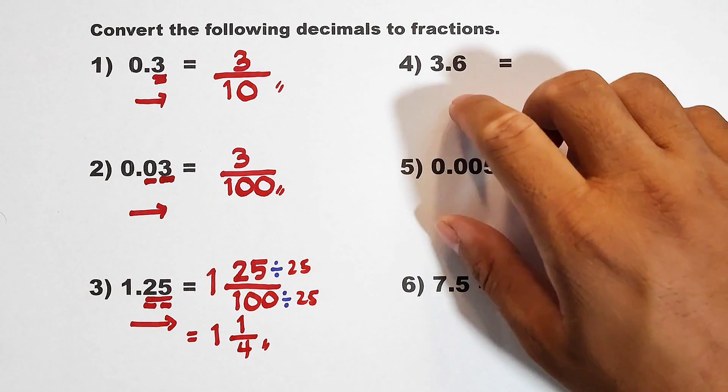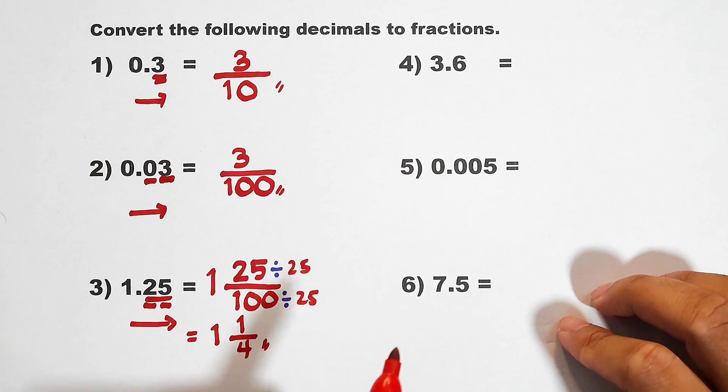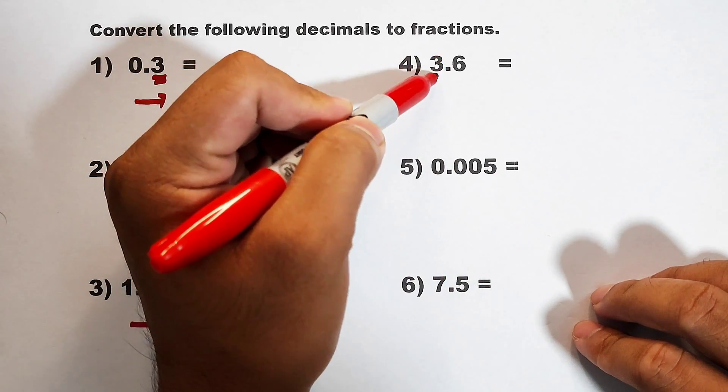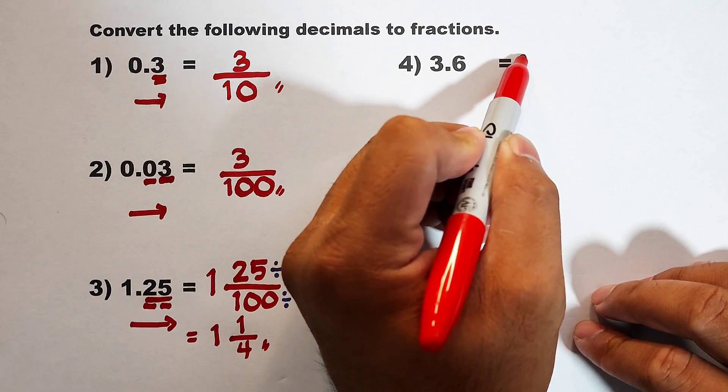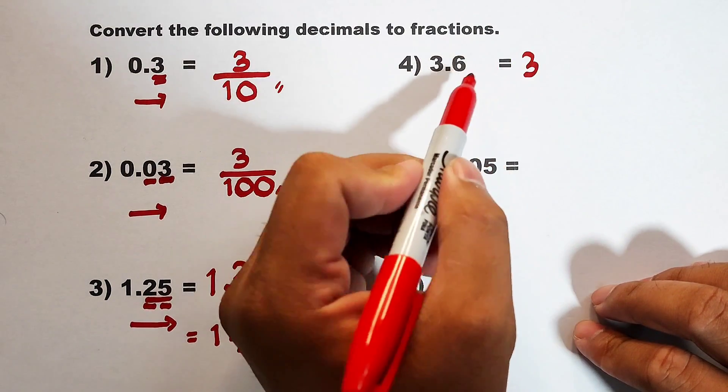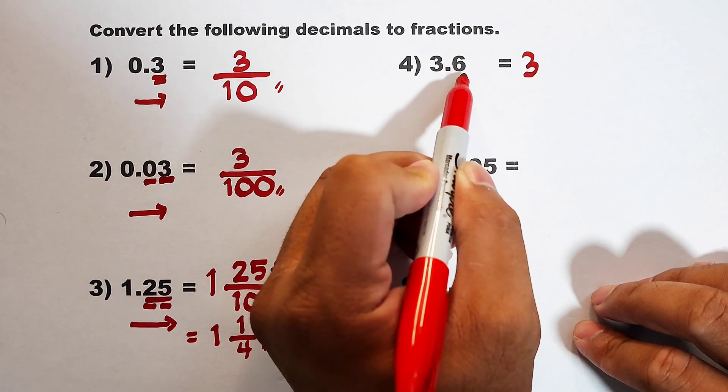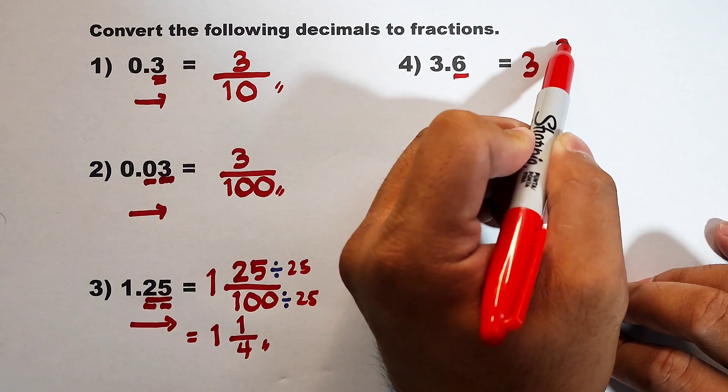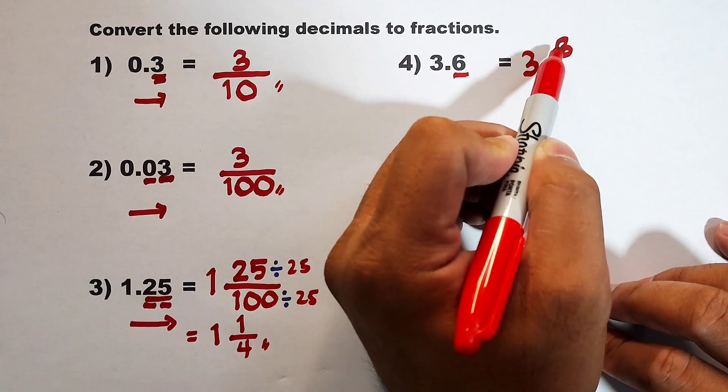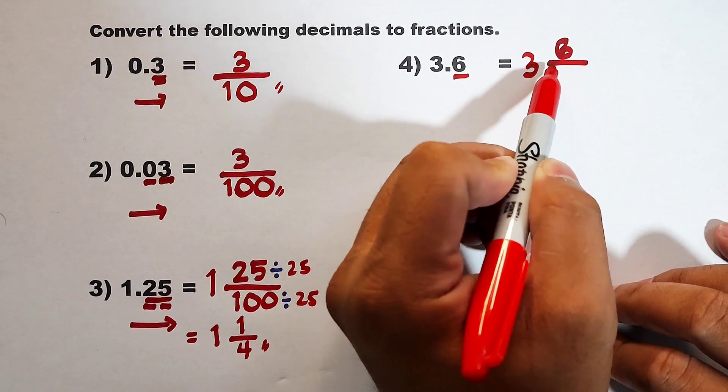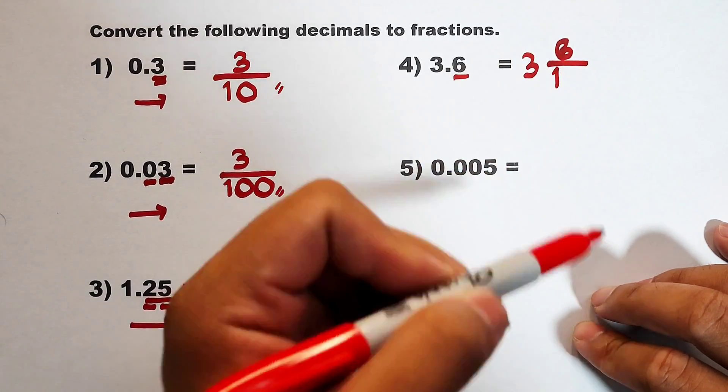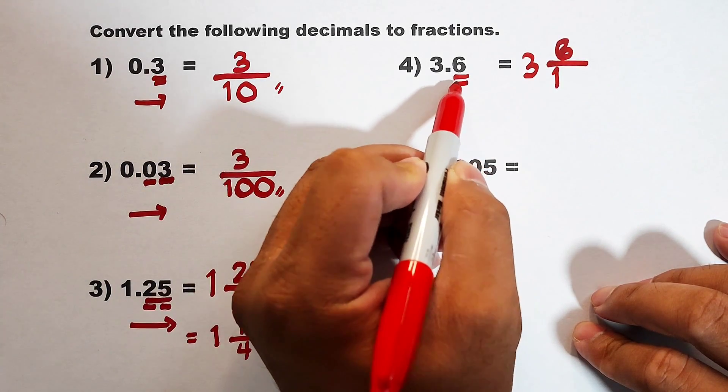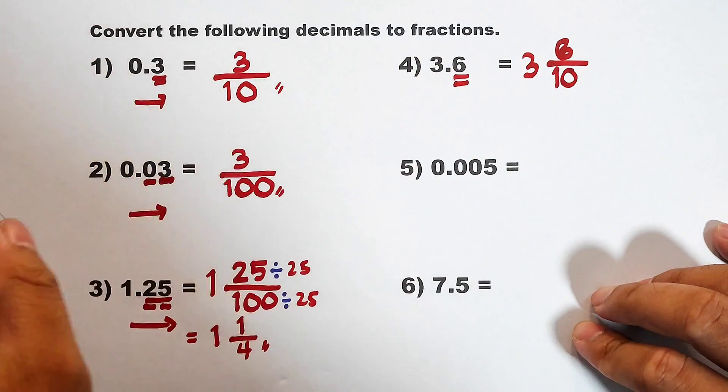Now let's continue with number 4. We have 3.6. So since we have here a whole number, we will put it as a whole number. Then, for your decimal, copy this number in your numerator. This is 6 over. Put a 1 here. And then for your denominator, count the number of decimal places. This is 1. So we will put 1, 0 here.